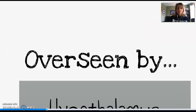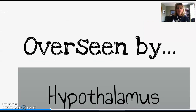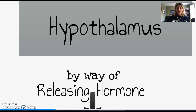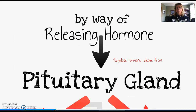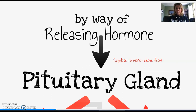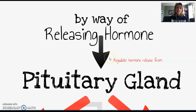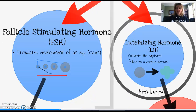All of this is overseen by the hypothalamus, which does this by way of a releasing hormone — in particular, GnRH, or gonadotropin-releasing hormone. When the hypothalamus releases GnRH, that is going to stimulate the release of FSH and LH from the anterior pituitary gland.